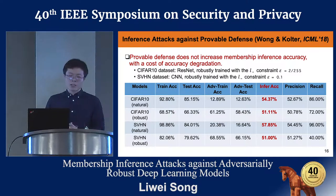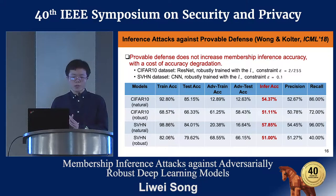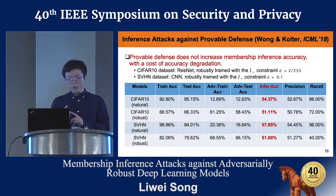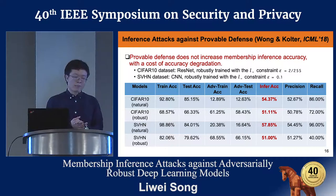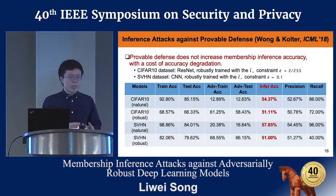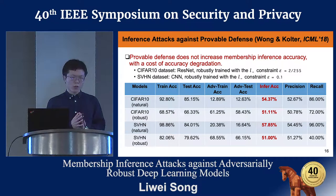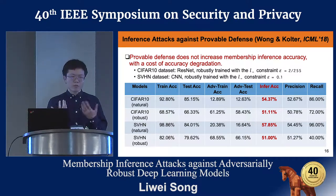For the provable defense, we do not observe an increase in membership inference risk for the robust model. However, it does cause a significant drop in accuracy performance. For example, the robust CIFAR-10 classifier achieves training and test accuracy below 70%, meaning the model doesn't fit the dataset well.